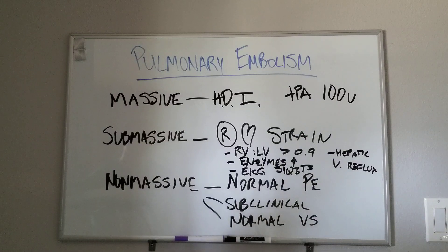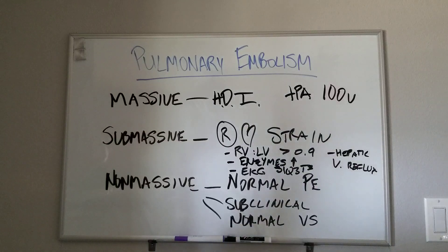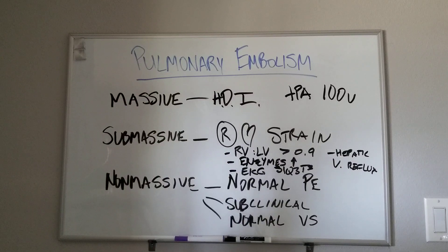For submassive, these are the people you really have to look at carefully. If it's a young, otherwise healthy 20-something-year-old with an undiagnosed hypercoagulable state or something else, this is where you want to consider catheter-directed thrombolysis — like an EKOS catheter, or consulting your vascular surgery team to see if they want to go after the embolism.